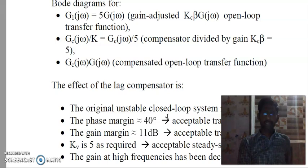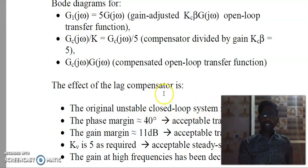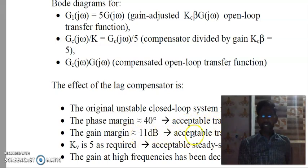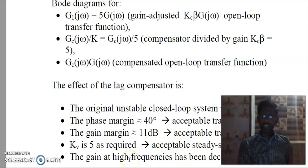The effects of the lag compensator — these are all the general effects. The original unstable closed loop system is now stable. After applying the lag compensator, the system becomes stable. The phase margin is approximately 4 degrees, which implies acceptable transient response. The gain margin is approximately 11 dB, which also implies acceptable transient response. The velocity constant is 5 as required, giving an acceptable steady state response. The gain at high frequencies has been decreasing.